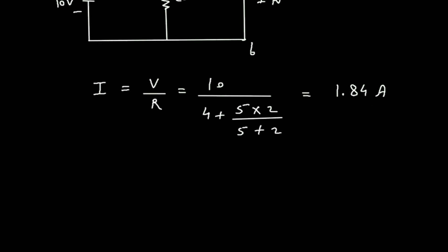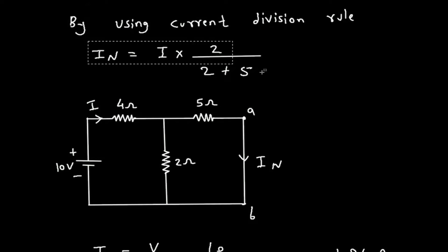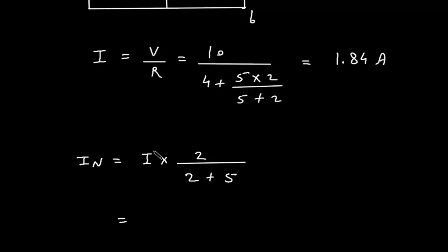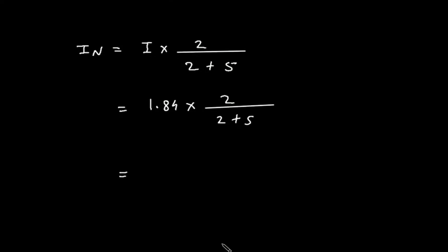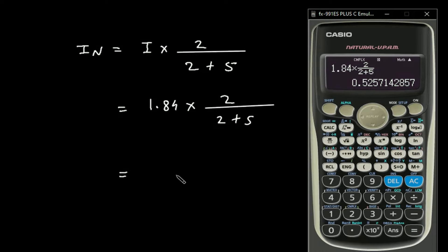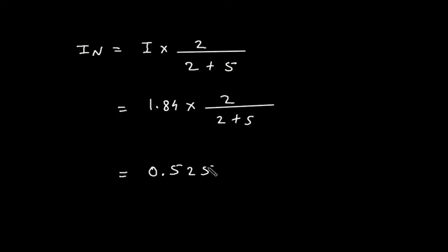This is the value for total current I. But we have to find In. So In is equal to total current I, which is 1.84, multiplied by 2 divided by 2 plus 5. So it is 0.525 ampere. This is the value for In.